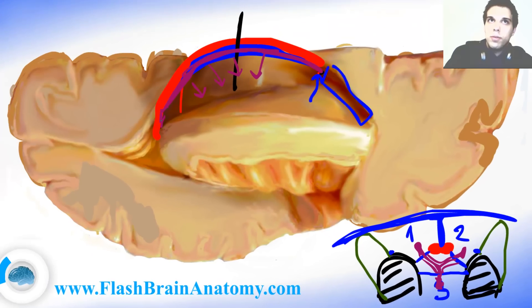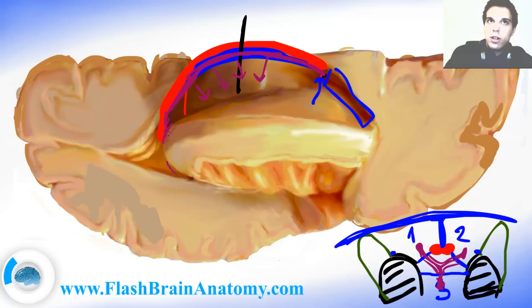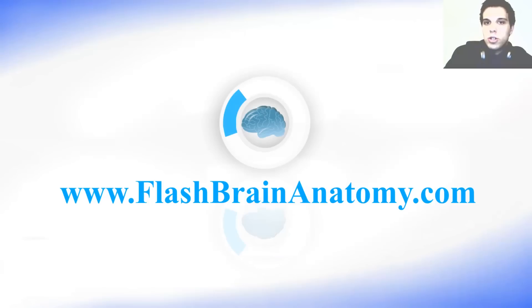The choroid plexus goes all the way down to the posterior horn. To see how the choroid plexus looks in detail and to learn more about brain anatomy, please check out my software and website.